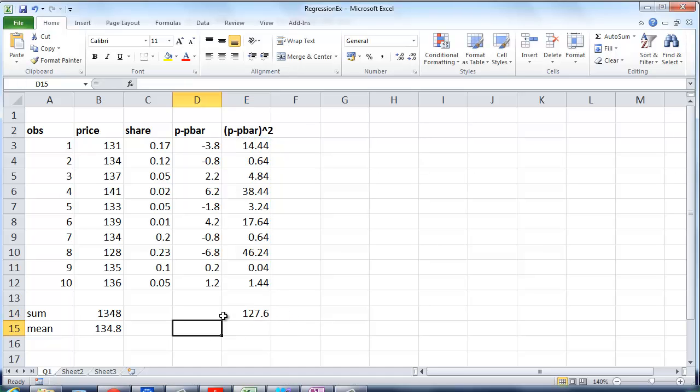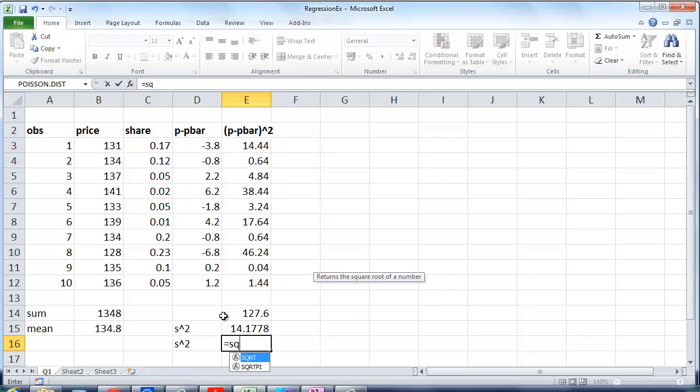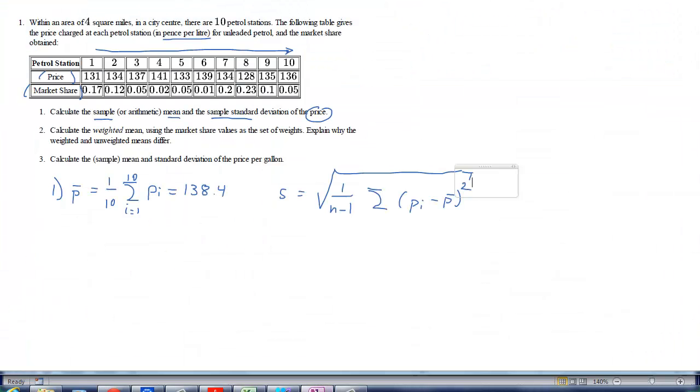And then, let's calculate s squared, the sample variance first. So we take the sum and we divide by n minus 1. That would be 9. We divide by 9. And if we want s, we just take the square root of that result. Here we go. 3.765. So we have the result here as 3.765. So that is part one.